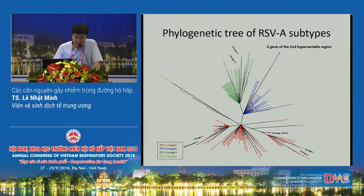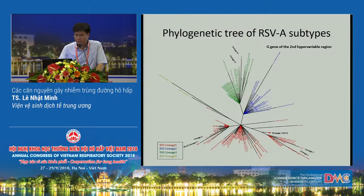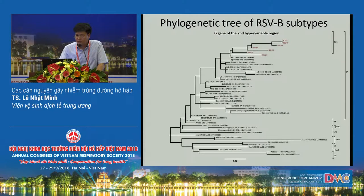In further analysis, we found that RSV group A had a high mutation rate and was classified into sublineages 1, 2, 3, and 4. Most of the RSV in our study belong to lineage 1. This slide also shows that RSV subgroup B belongs to the BA9 group.